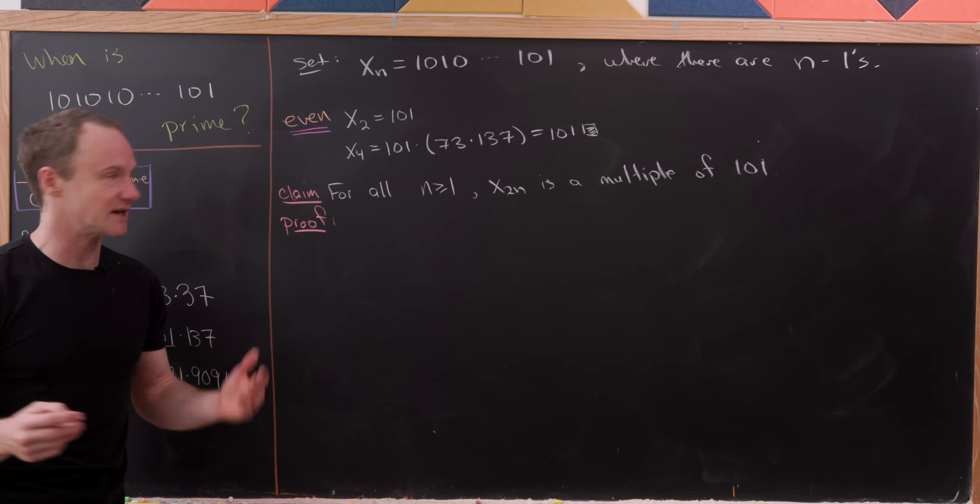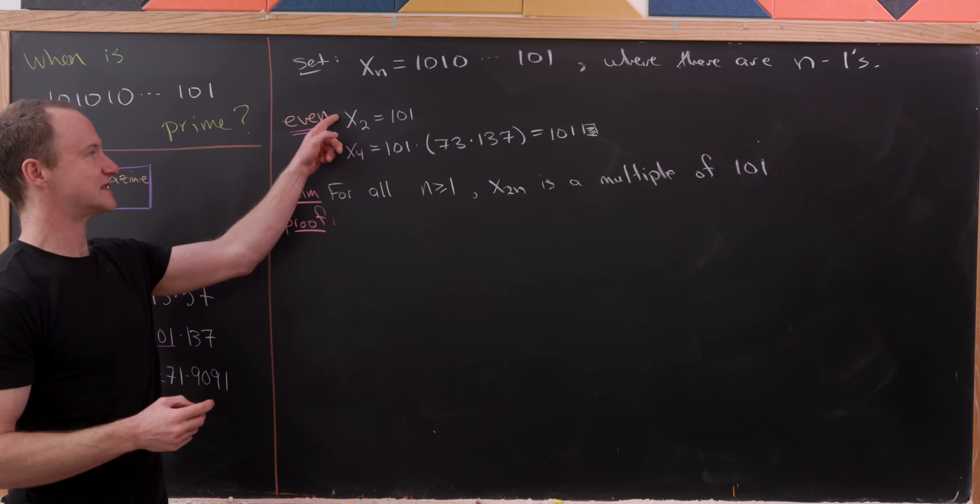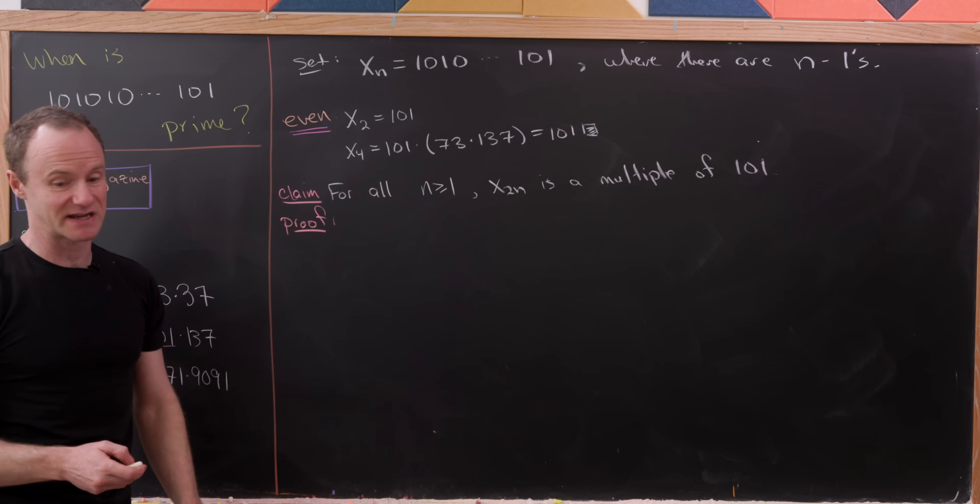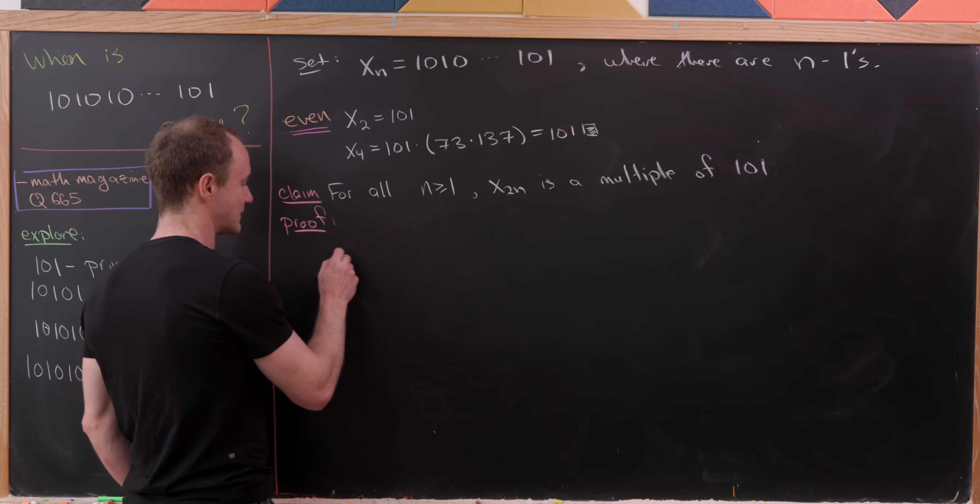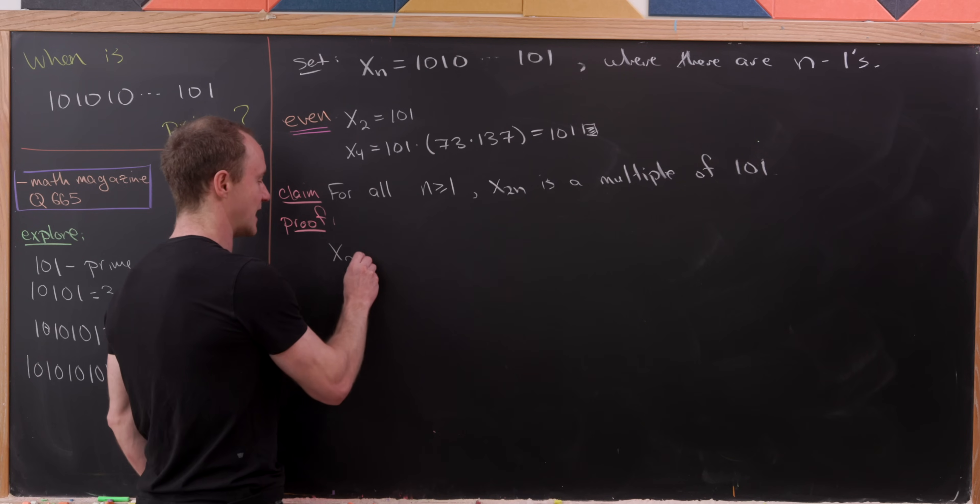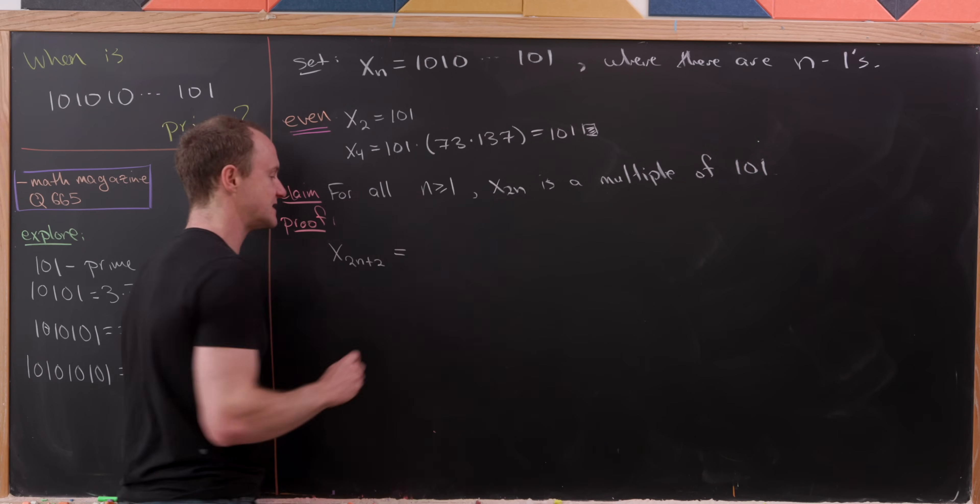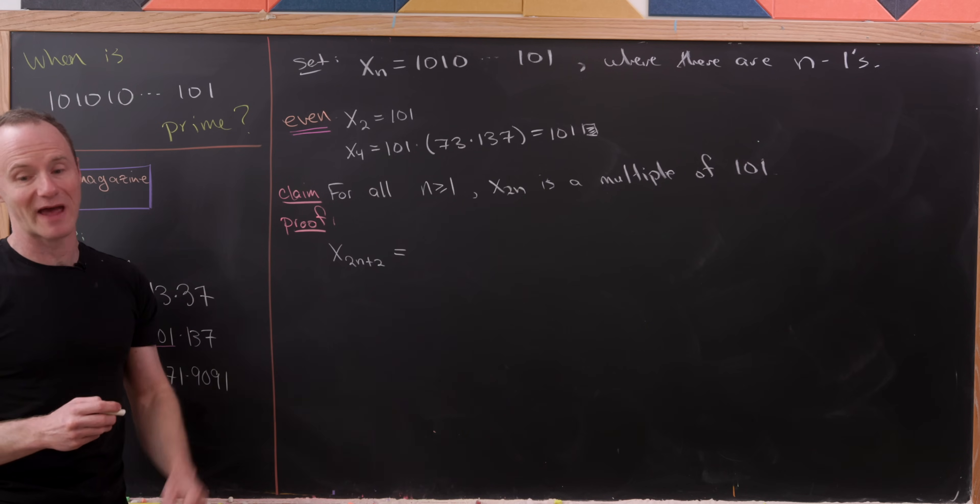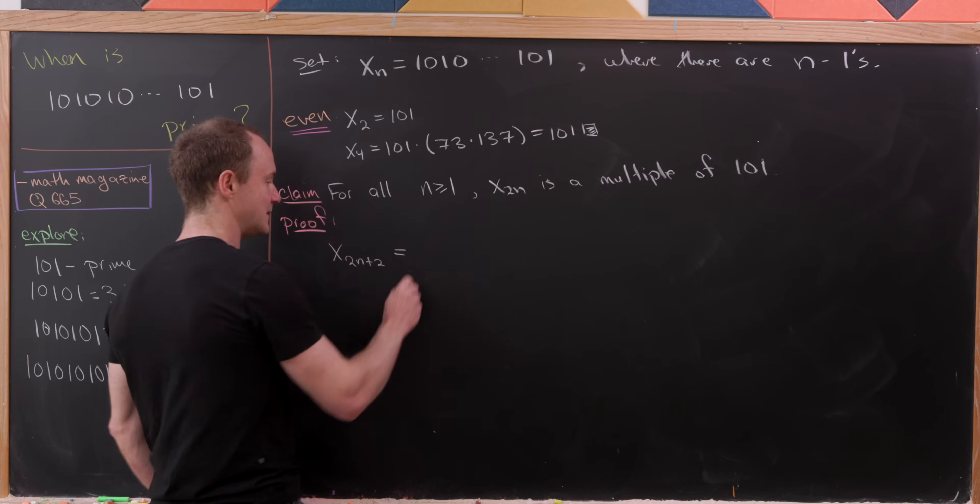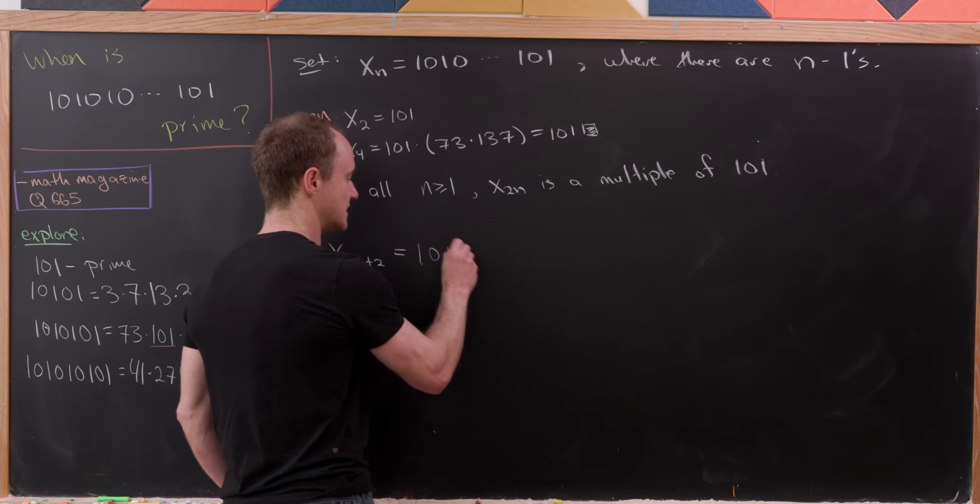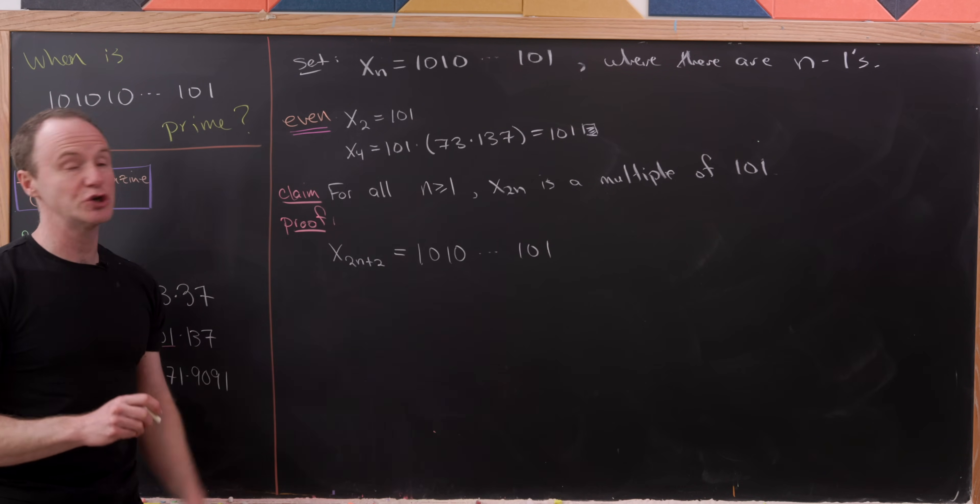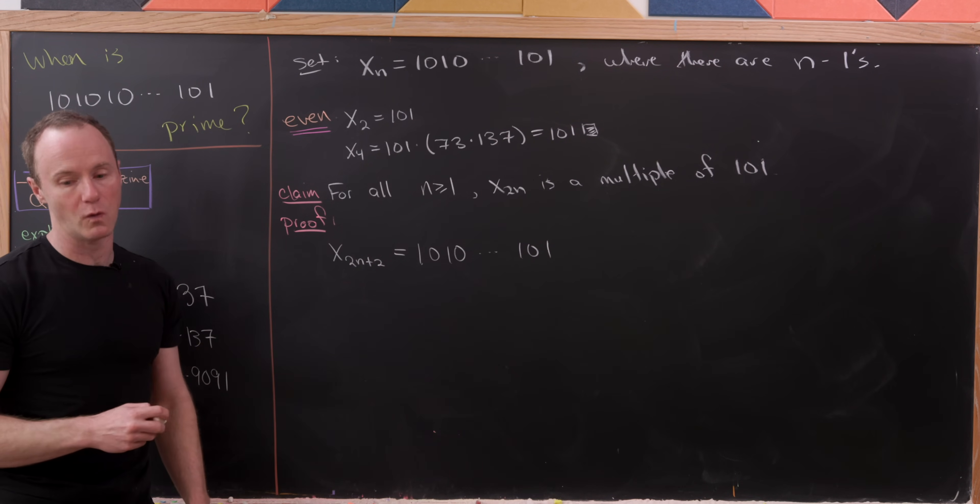Well, how does the proof of this go? We can do it by induction. Our base case is on the board right here with x2, or maybe even x4 would be a second base case. And then we would perhaps look at x sub 2n plus 2 and see if we can show that that's a multiple of 101 if we assume x sub 2n is. And in fact, we can and it's not so bad. So let's write this as 1010, and so forth, 101.